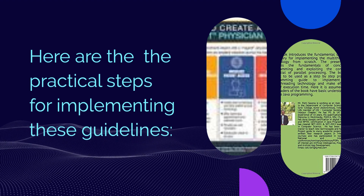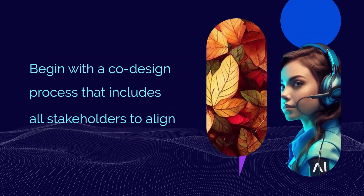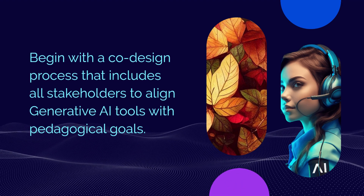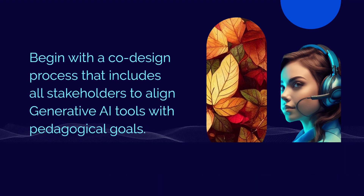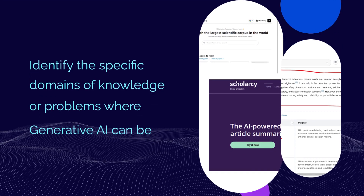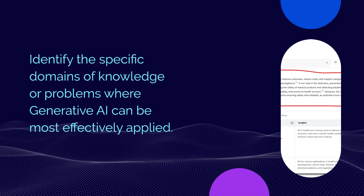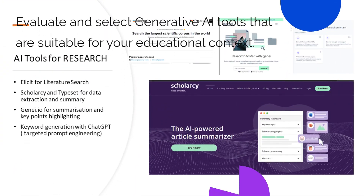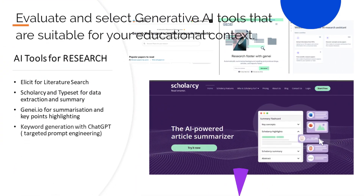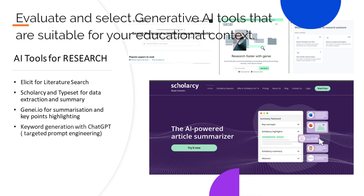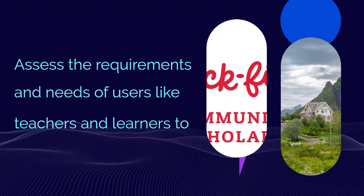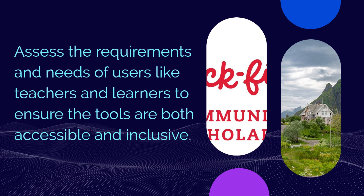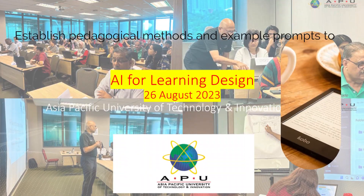Here are the practical steps for implementing these guidelines. Begin with a co-design process that includes all stakeholders to align generative AI tools with pedagogical goals. Identify the specific domains of knowledge or problems where generative AI can be most effectively applied. Evaluate and select generative AI tools suitable for your educational context, and assess the requirements and needs of users like teachers and learners to ensure the tools are both accessible and inclusive.